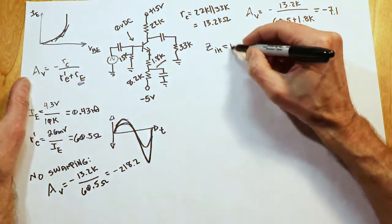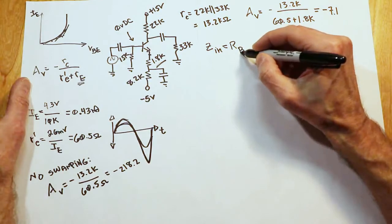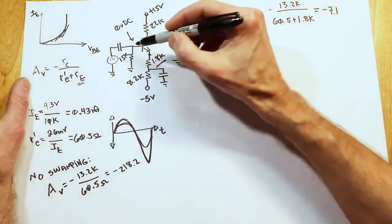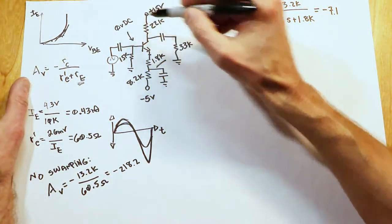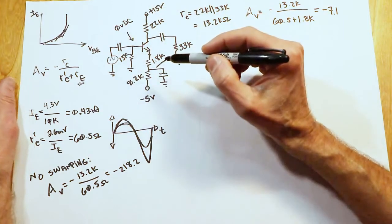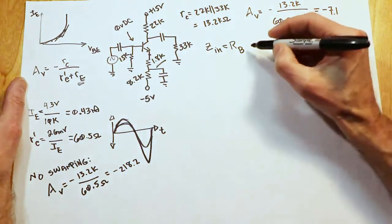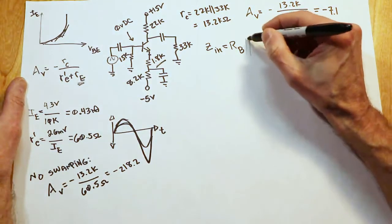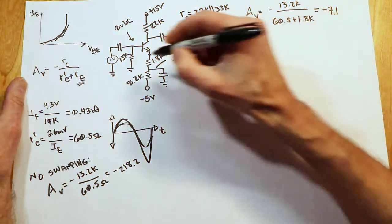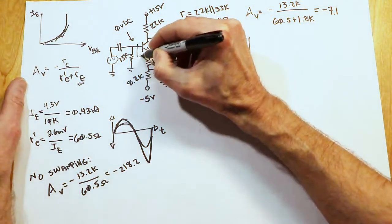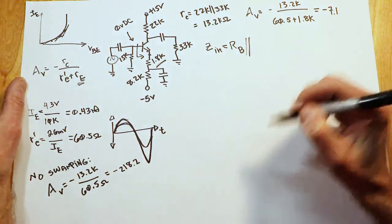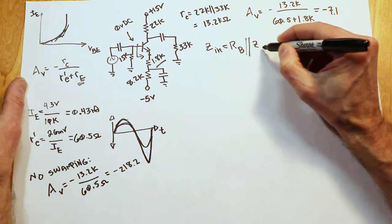We've got a biasing resistor on the front end, maybe more than one. If this was a voltage divider, for example, we would have two resistors out here. They would wind up in parallel for the AC case, because our power supply would be in AC ground. In this case, we just have the one, we have 15k, and that's going to be in parallel with whatever the impedance is looking into the base of the amplifier. So that value, Zn base,